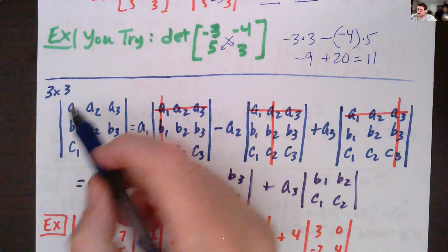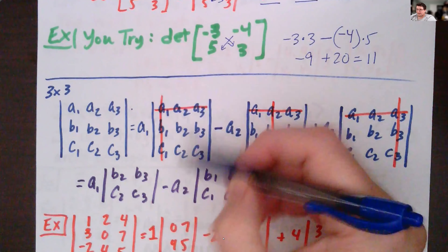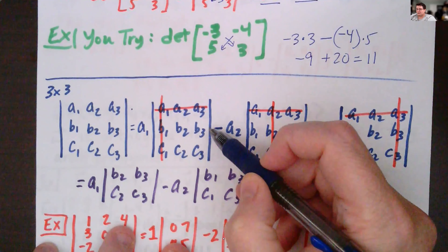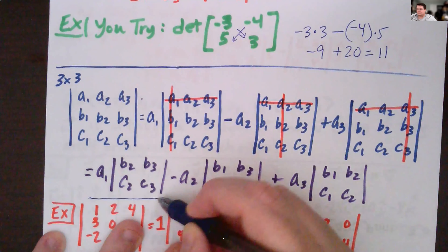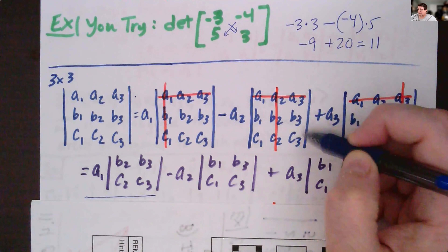I'm going to go along the top row and do A1 times what's left over. If I cross off the row and the first column, I'm left with B2, B3, C2, C3 — so A1 times that. Then I move to the next one: in the top row, center column, cross off the top row and middle column, and I've got B1, C1, B3, C3. The middle one is a minus.